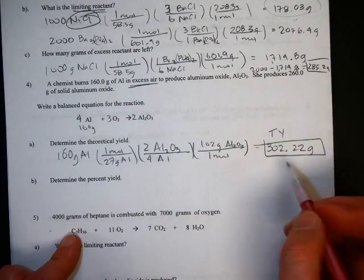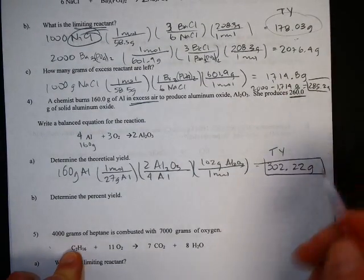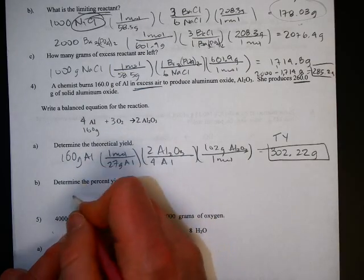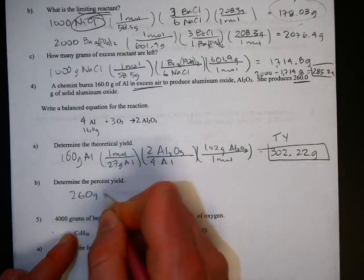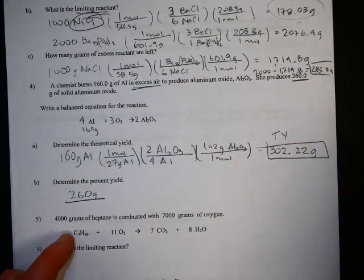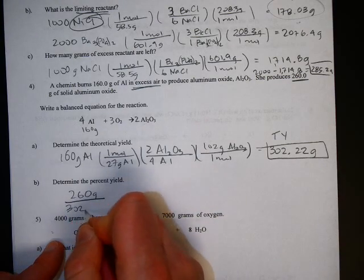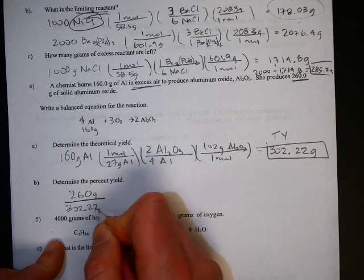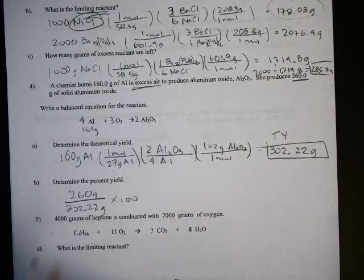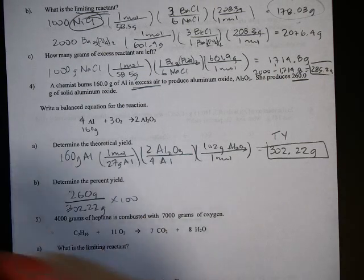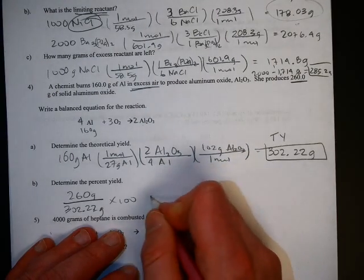In this case, though, we didn't really make that much. We made 260 grams. So the percent yield is what you really made. 260 grams. Divide by what you should have made, which is 302.22 grams times 100. You get about 86.1%.